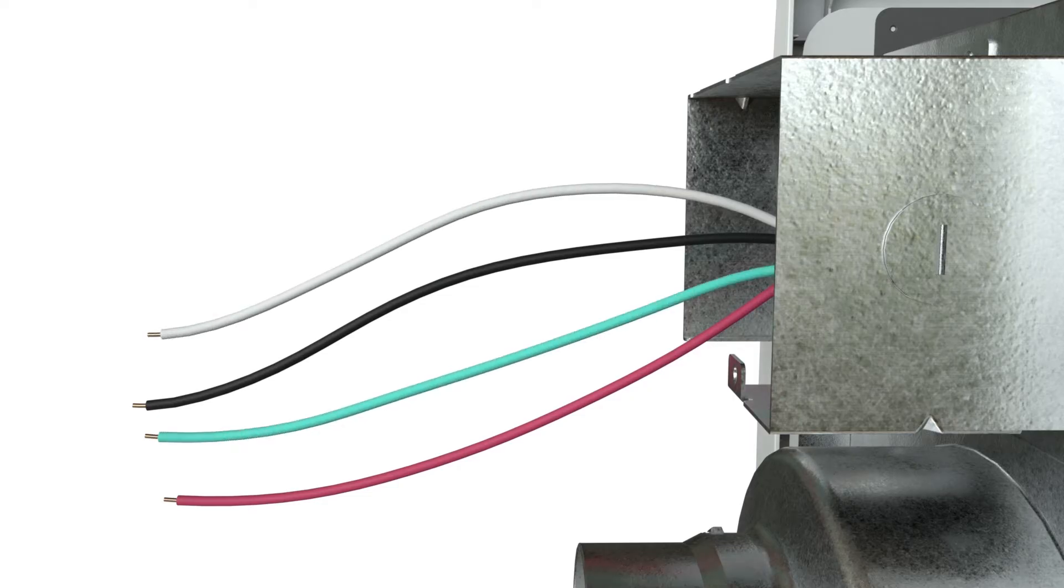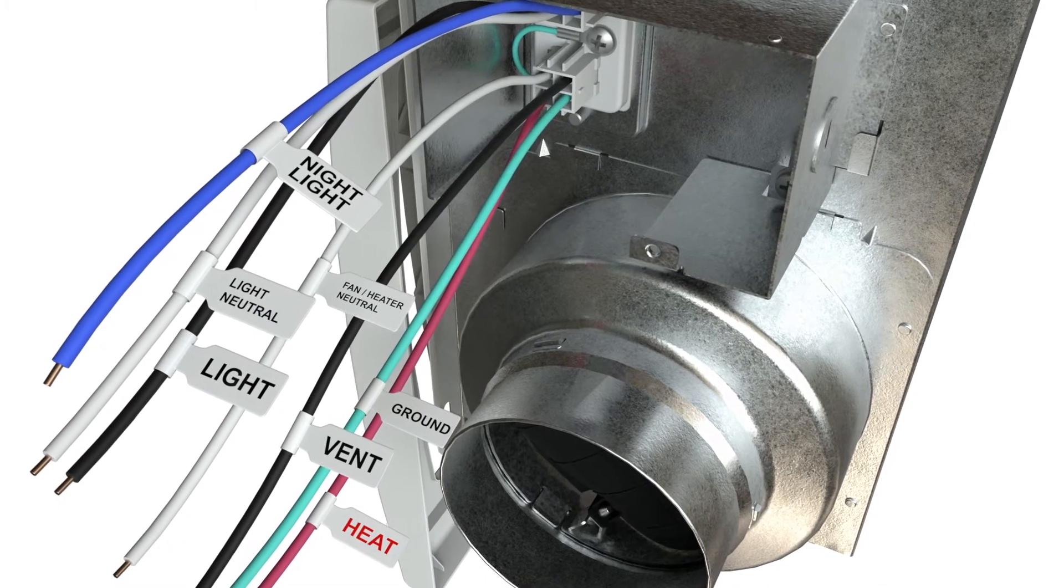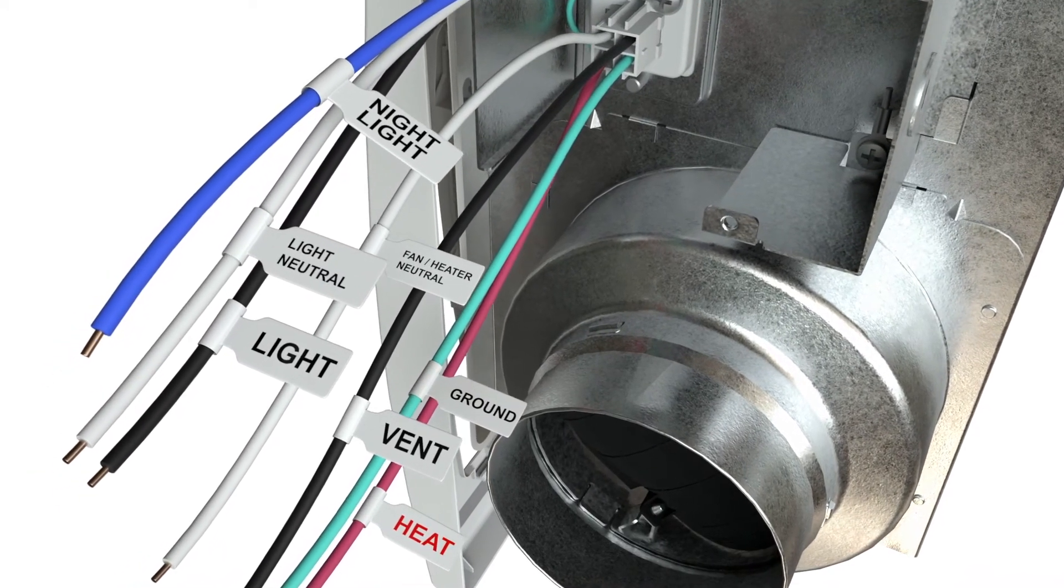The fan light units will have an extra blue, black, and white lead for the light kit. On each color lead wire you can find the label showing what each lead wire is used for.